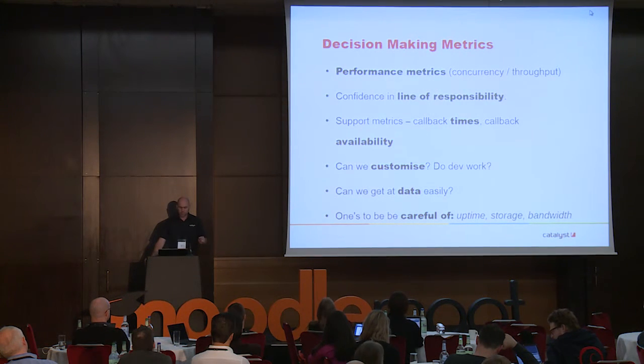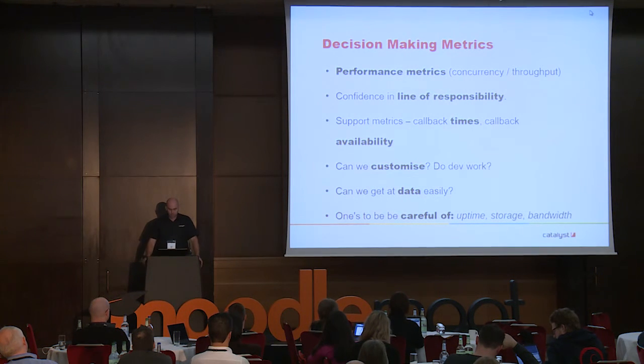One more thing about performance metrics: things like uptime, storage, and bandwidth are way down the list. Anything over 99% uptime just means the site isn't allowed to go down — 99.9, 99.5, 99, whatever. It's actually much more valuable to understand what the escalation responsibilities are if there's an issue, and the guarantees around when they'll call you back and how quickly they'll resolve things — that matters more than an uptime figure.